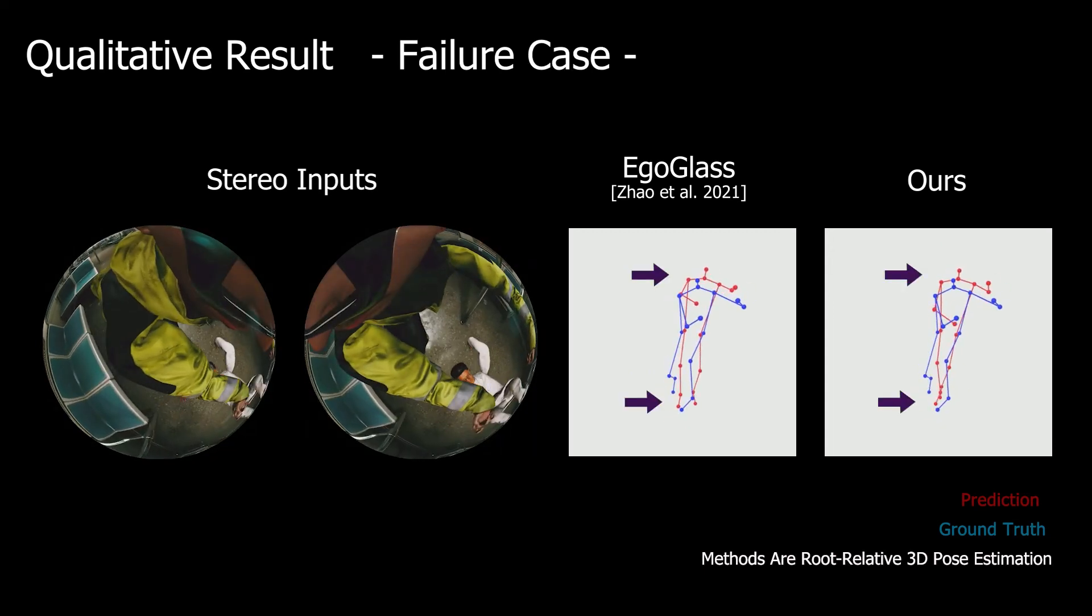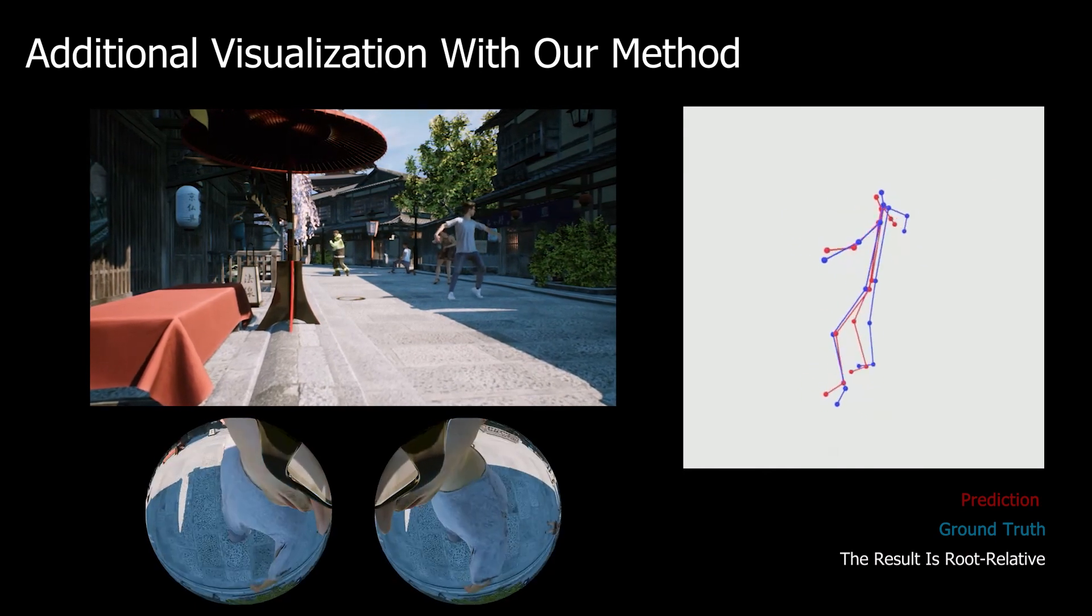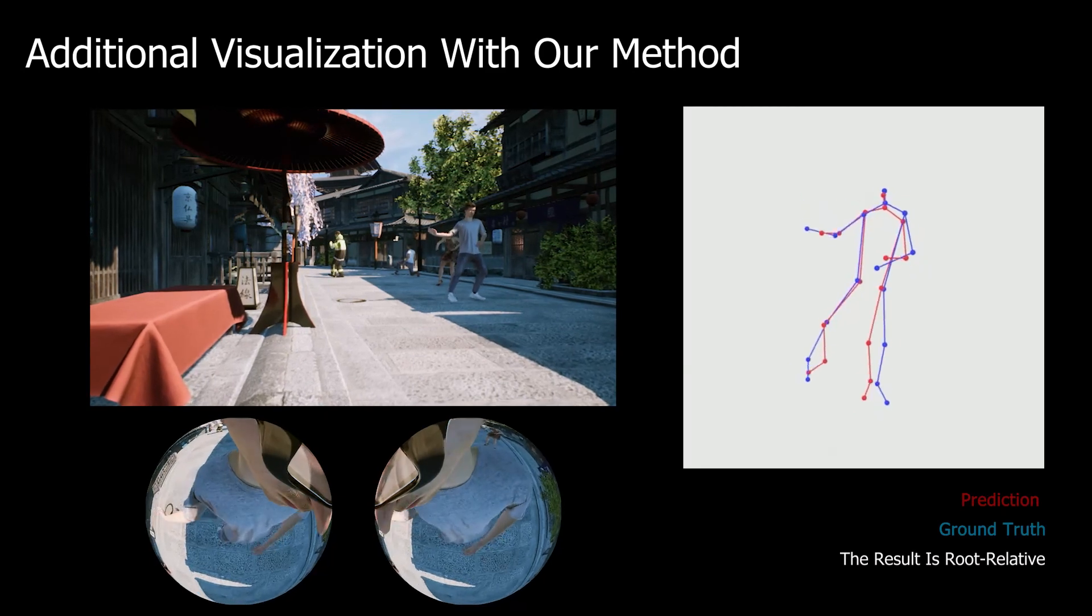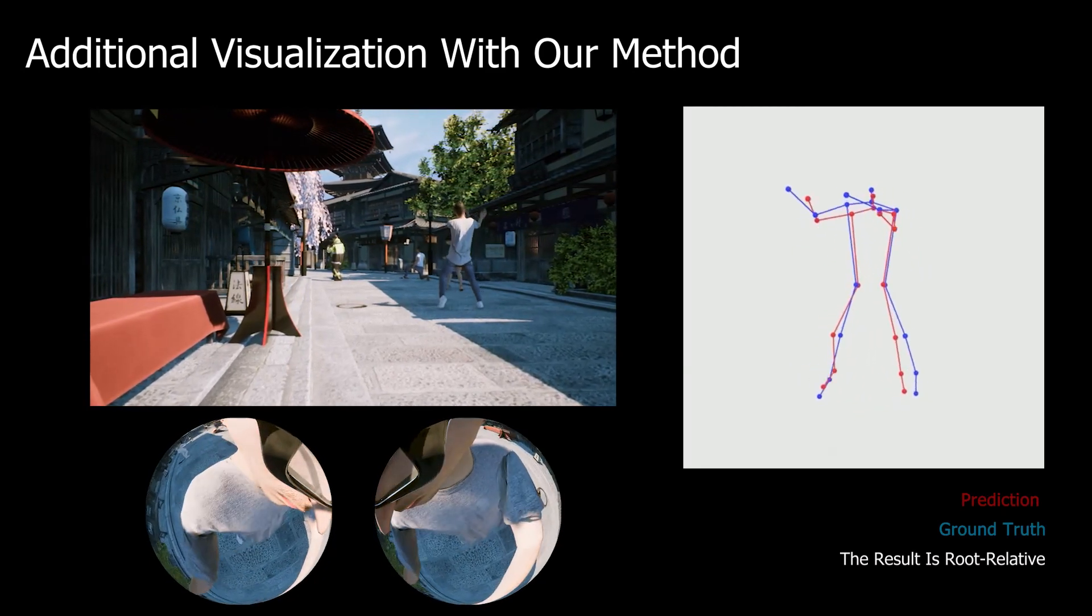However, there are some failure cases where all methods struggle with severe occlusions in the images. This shows us some future research directions, such as taking into account temporal context. Here, we show more results of pose predictions from our method. Again, our method shows promising results, even on highly complex motion sequences.